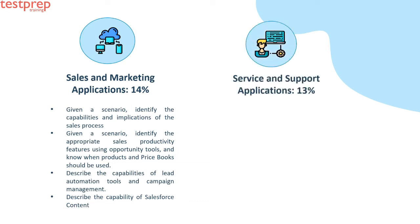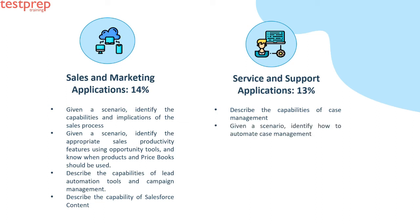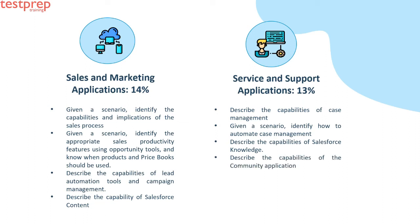Service and Support Applications, 13%: First, describe the capabilities of case management — for example, case processes, case settings, and case comments. Second, given a scenario, identify how to automate case management — for example, case assignment, auto-response, escalation, web-to-case, email-to-case, and case teams. Third, describe the capabilities of Salesforce Knowledge. Fourth, describe the capabilities of the community application — for example, ideas and answers.